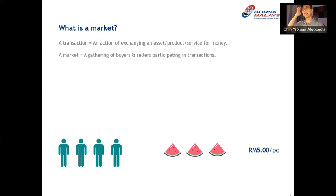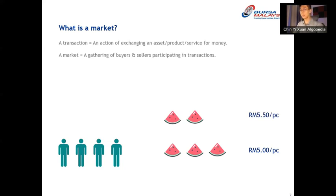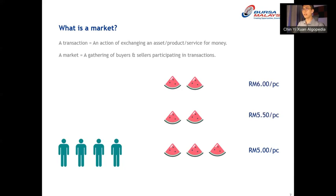Not only that, products are not just sold at one specific price. Watermelon sellers may decide to sell at five-fifty, or six ringgit. So a market is where buyers and sellers come together and do business at various price levels — it's not as complicated as it seems.